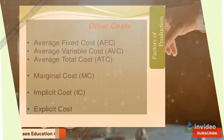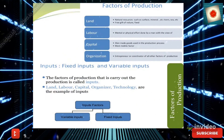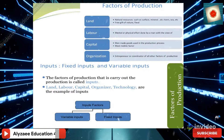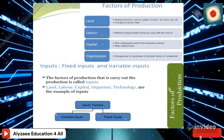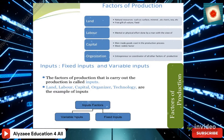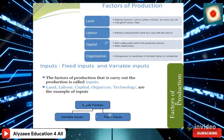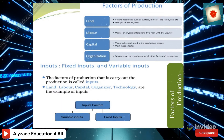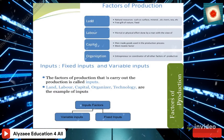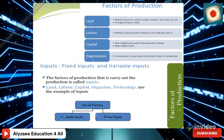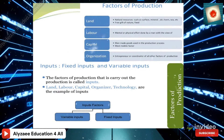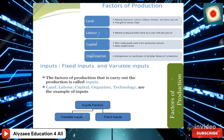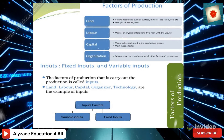We will also be looking at average fixed cost and the different factors of production — land, labor, capital, and organization. Land includes natural resources such as surface, minerals, air, rivers, and sea. These are free gifts of nature and are fixed in supply.